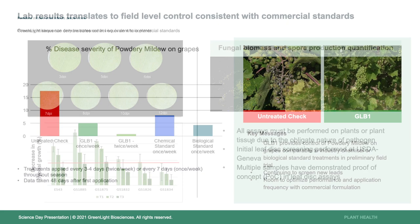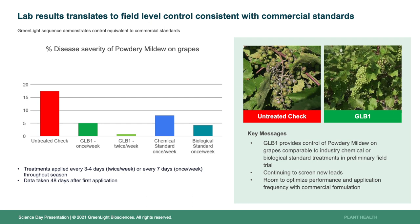Once we get these results, we want to move to the field, and it's important to ensure that what we see in the lab translates to the field. With powdery mildew, the lab results are consistent with what we're seeing in the field. The bar chart here shows field results — the untreated check in red reflects disease severity, meaning coverage of disease on the leaf surface, so higher bars are bad. The red untreated bar shows close to 20% of the leaf surface covered by powdery mildew. Green Light treatments — once a week with GLB-1 or twice a week with GLB-1 — show increased control with more applications, alongside chemical and fungal standards on the right side of the graph.